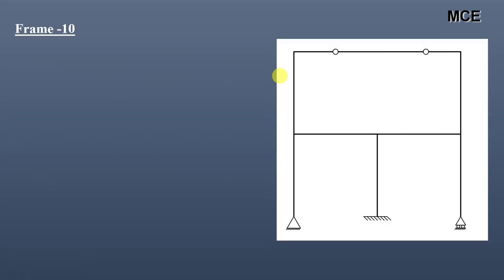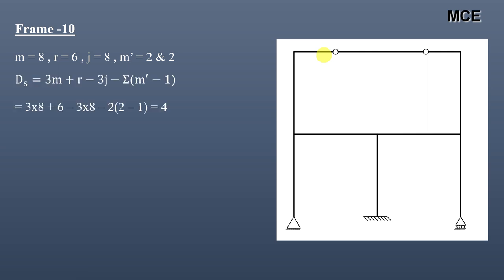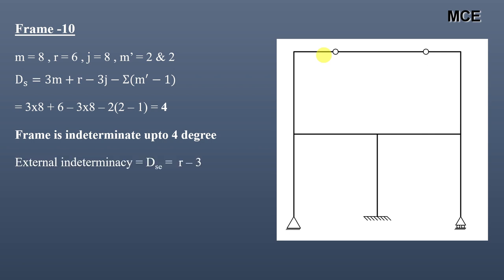For Frame 10, we can see it has 8 members, 6 reactions, 8 joints, and 2 internal hinges. The number of members meeting at both internal hinges is 2, so m′ = 2 and 2. The value of ds = 4, so this frame is indeterminate to 4 degrees. External indeterminacy = 6 − 3 = 3. Internal indeterminacy = 4 − 3 = 1.